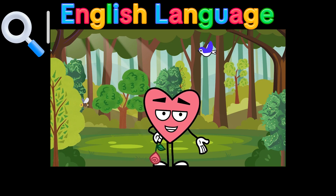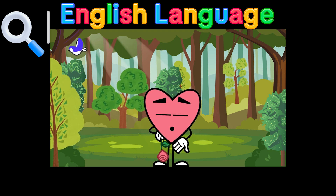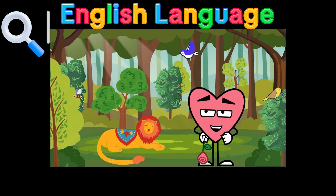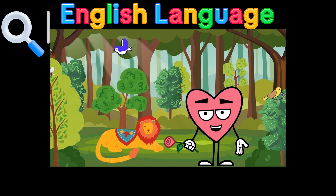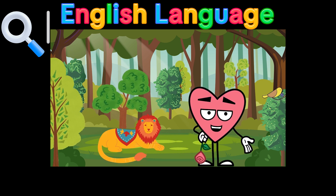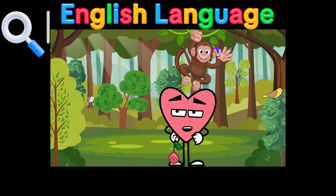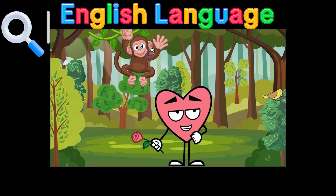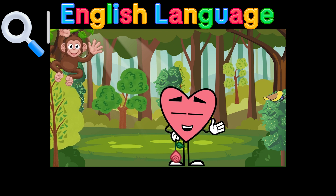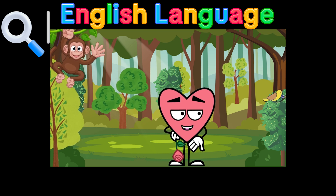Hi there, friends! Welcome to our amazing animal adventure. Today, we're going to learn about some incredible animals from all around the world. Are you ready? Let's go! First, let's visit the savannah and meet the mighty lion. Lions are known as the kings of the jungle, but they actually live in the grasslands. They have a loud roar that can be heard up to five miles away — wow, that's impressive! Now, let's head to the forest and find our friend, the playful monkey. Monkeys are very smart and love to swing from tree to tree. Did you know that some monkeys can use tools like sticks to find food? They're clever little creatures!